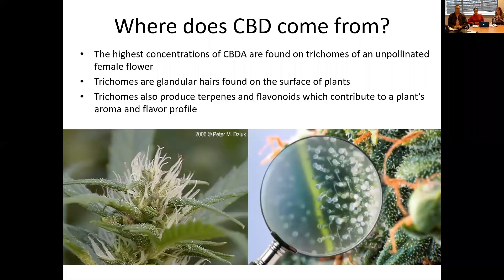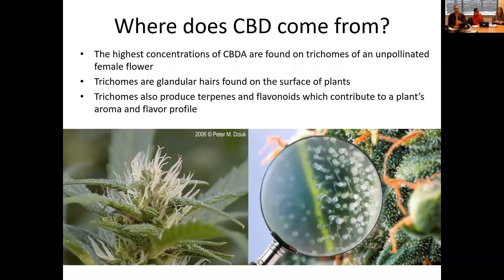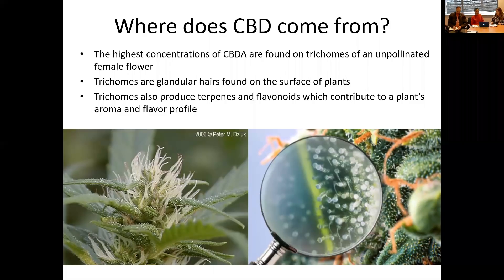There are males and there are females. All around the flowering area there are trichomes — glandular hairs found on the surface of the plant. Those glandular hairs produce all of the cannabinoids, as well as terpenes and flavonoids, which all contribute to the plant's aroma and flavor profile. That's why it becomes very important to understand which plants are female and which are male when going for CBD production, because you really only want to focus on the females. If you have males, they could potentially pollinate your females, which will drastically decrease your CBD extraction later on.